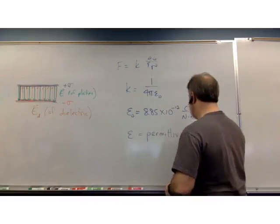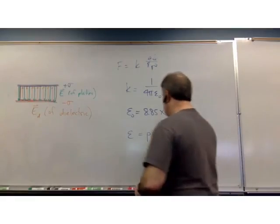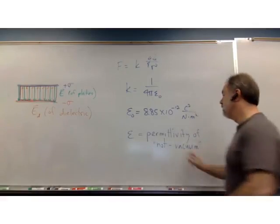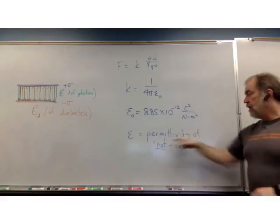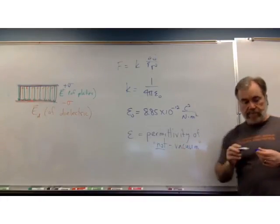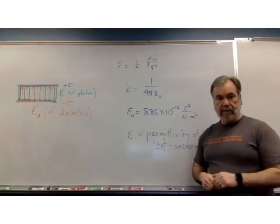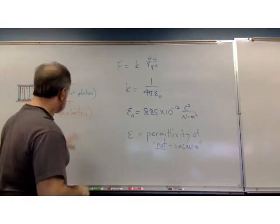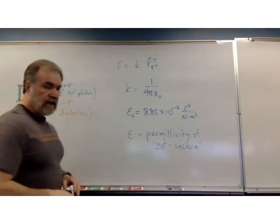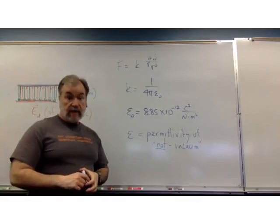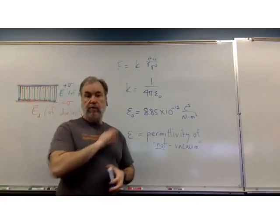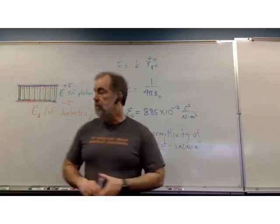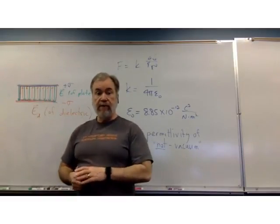But if we do have something other than vacuum and we want to talk about its permittivity, we use the same symbol except we leave off the subscript zero. We just call it epsilon. And so putting the subscript zero on there is your visual alert that the number that you're looking at is the permittivity of vacuum exclusively. If you don't mean vacuum, then you simply call it epsilon without any subscript at all. Is the key of not vacuum. So this is the permittivity of vacuum. And if you have anything else, you just call it epsilon.